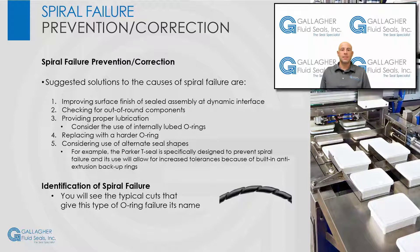T-seals are available to fit a number of standard AS568 O-ring grooves and may directly interchange with O-rings in most cases. To identify spiral failure, it's common to see the cuts that gave this type of O-ring failure its name.